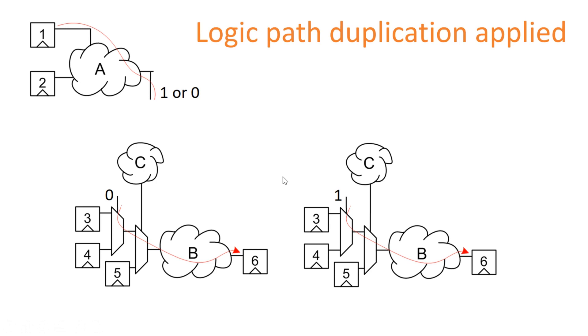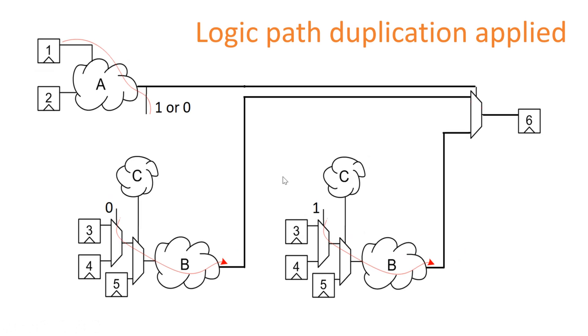But how the functionality will remain similar to my previous functionality? To achieve that I need to put one MUX here. If output of combinational logic A is 0, that means the output of this unit should be passed to this flip-flop 6. If output of this combinational logic A is 1, that means the output of this unit should be passed to this flip-flop 6. So this way the functionality will also remain similar to my previous functionality.